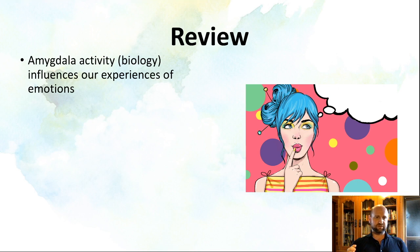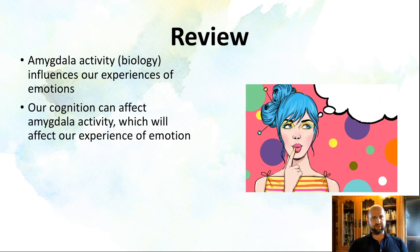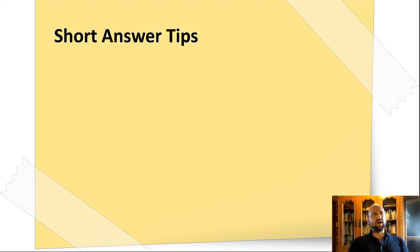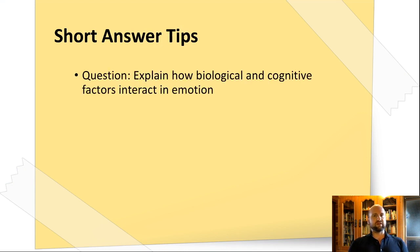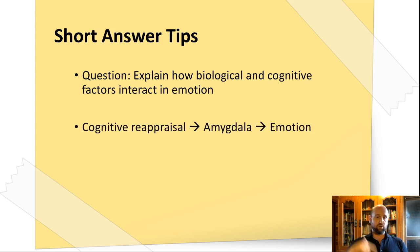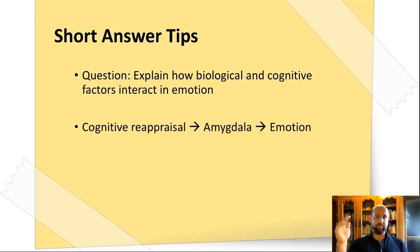That's exactly what the learning outcome asks for: how cognitive and biological factors interact — how they influence one another. Cognitive reappraisal affects our emotion because how we think affects our feelings, but reappraisal does that through its influence on the amygdala. For short answer tips: if this question comes up, I would choose the top-down processing example using cognitive reappraisal, because you get both the cognition and the biology. If you just focus on bottom-up processing and SM's study, there's no real example of cognition, so you'd limit yourself. Use Uri et al.'s study to support this.